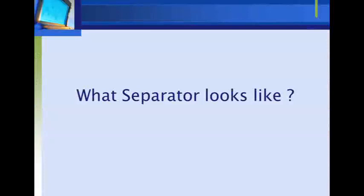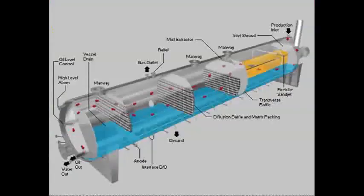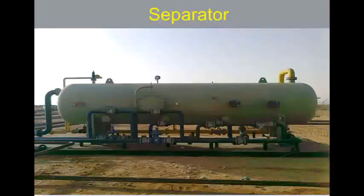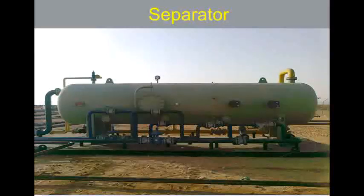Separators are horizontal or vertical vessels with internal configurations built to facilitate the separation of phases. They are usually the first vessel in oil and gas processing facilities, which are sometimes called a gas-oil separation plant, or GOSP. Sometimes more than a single separation vessel is installed in the process plant, depending on the requirements and fluid properties.